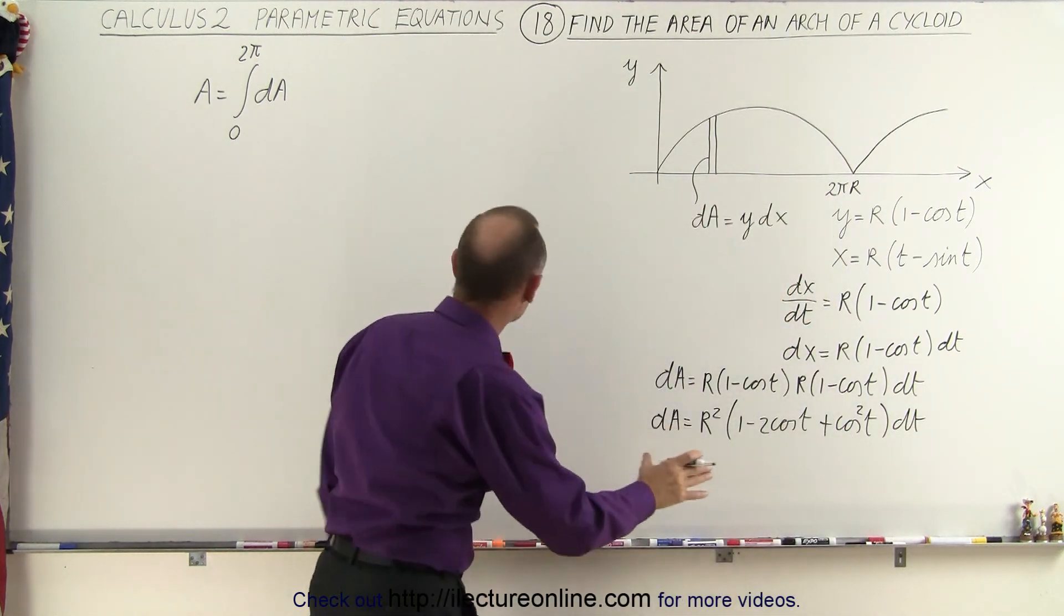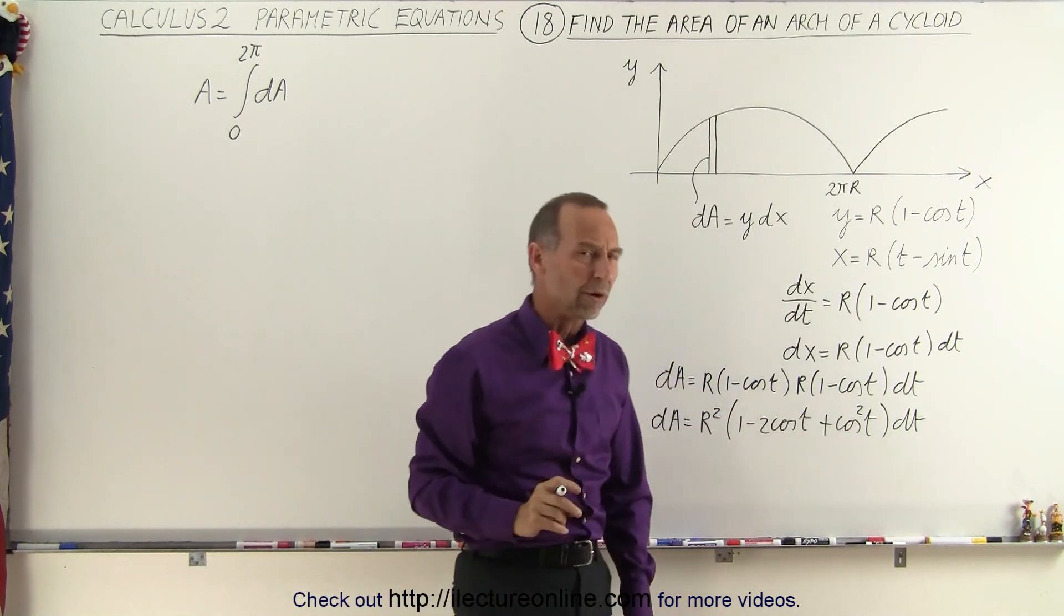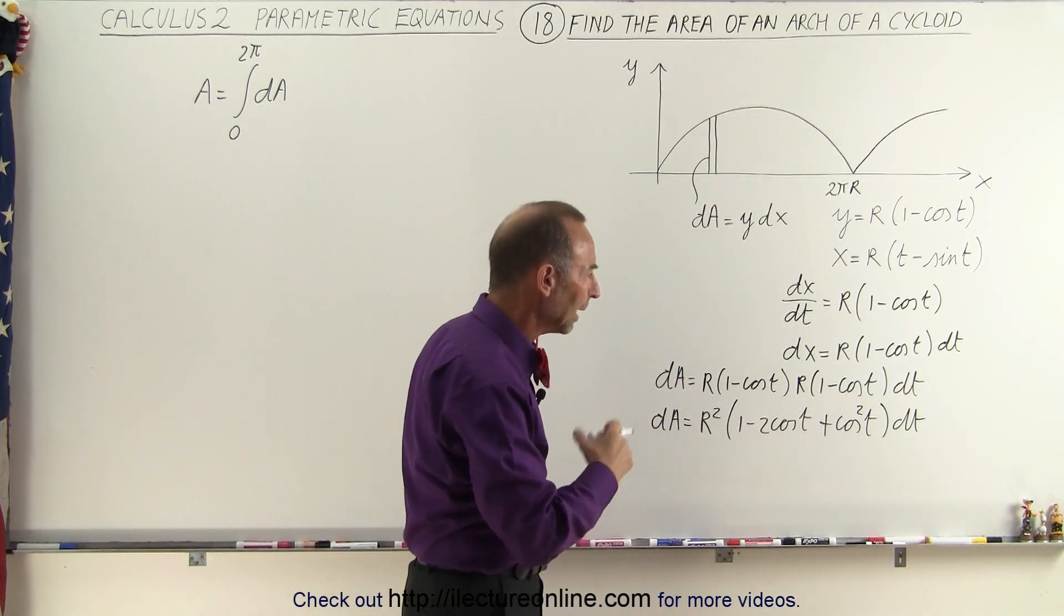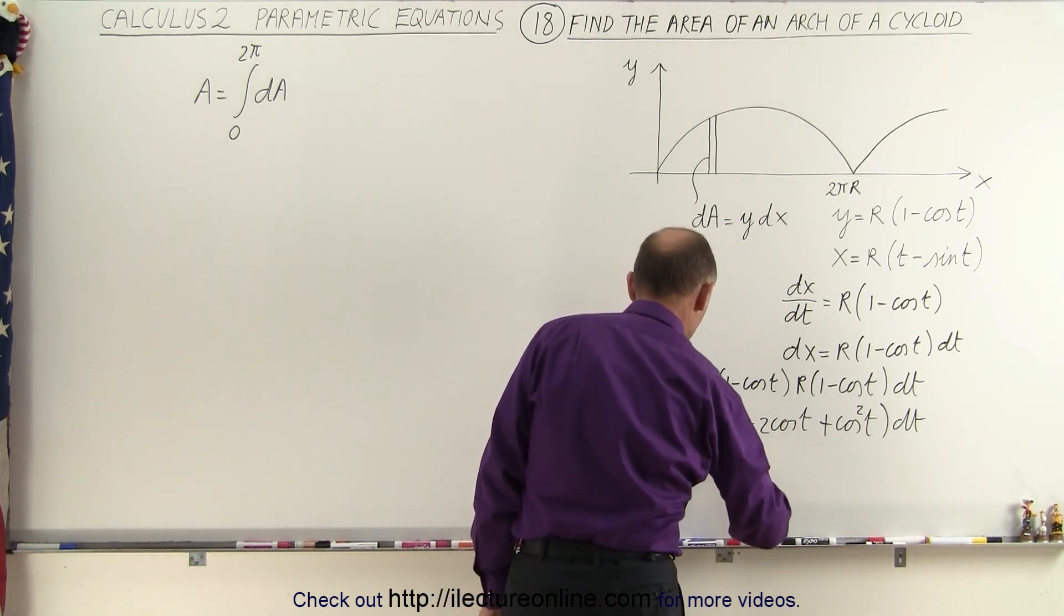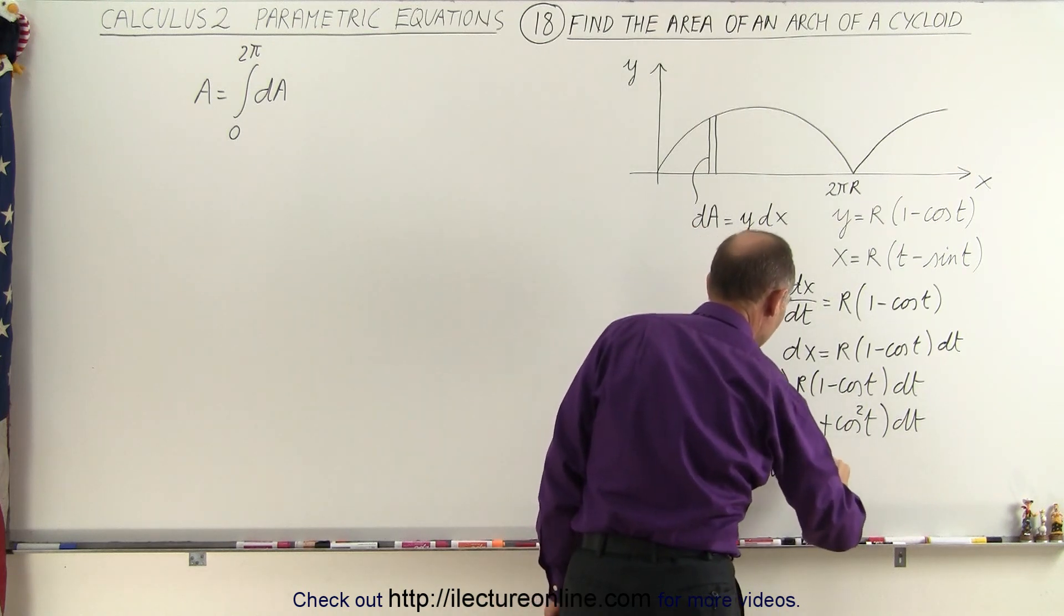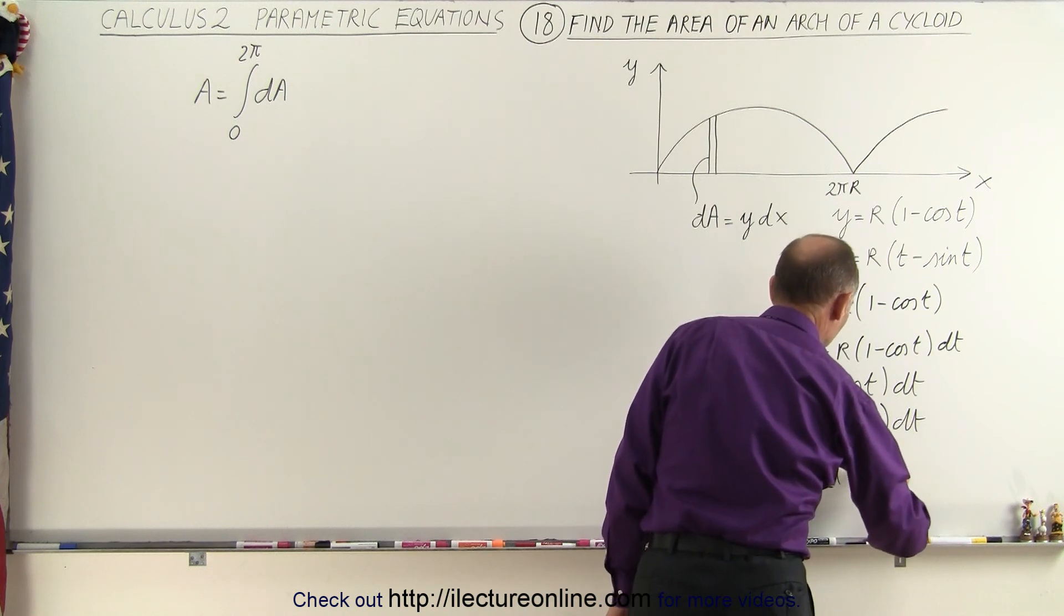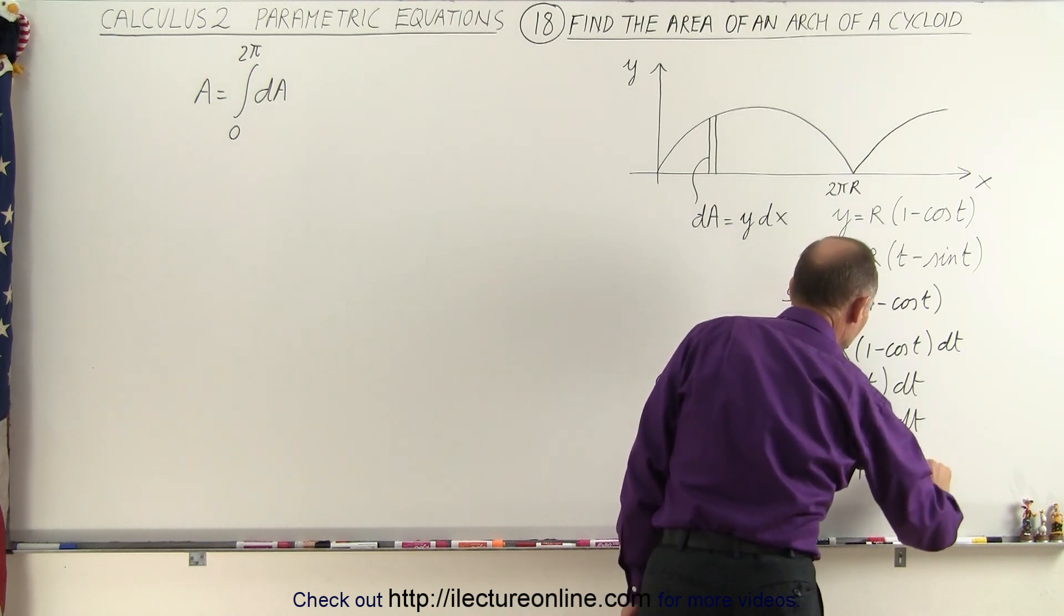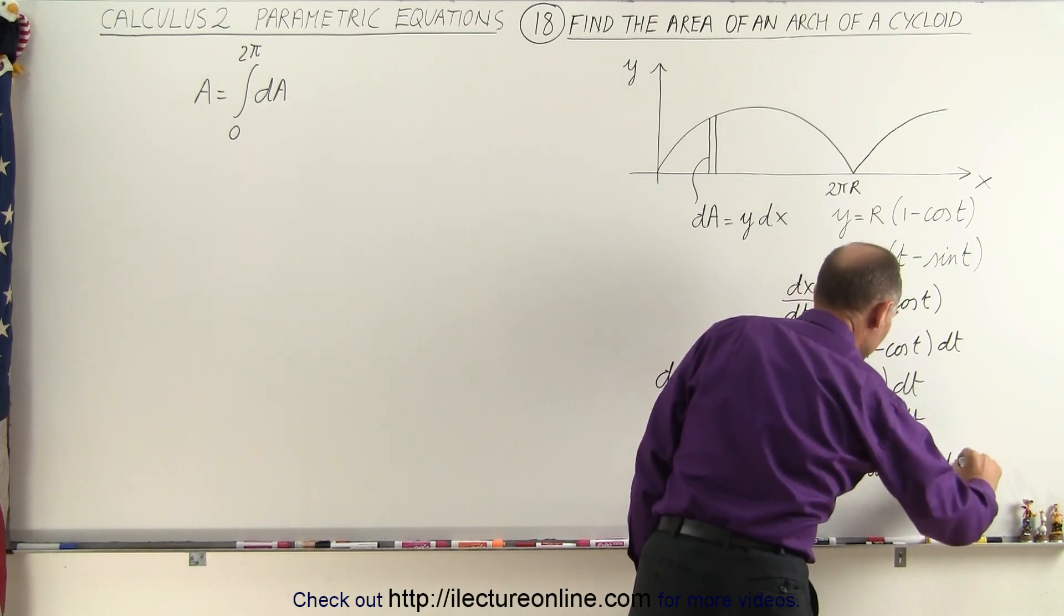Now if we're going to plug that into our integral right here we have a little problem. We have a cosine squared of t, so we can use an identity there. We can write that dA is equal to r squared times 1 minus 2 times the cosine of t plus 1 half times 1 plus the cosine of 2t and on the whole thing multiply times dt.